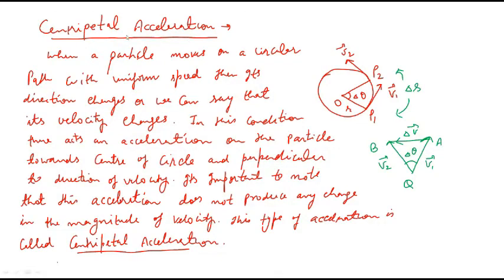Hello everyone, today we will discuss about this topic. When a particle moves on a circular path with uniform speed, its direction changes at every point on the circumference of the circle. We can say that the velocity of the particle changes at every point on the circle. In this condition, we can say that an acceleration acts on the particle towards the center of the circle.